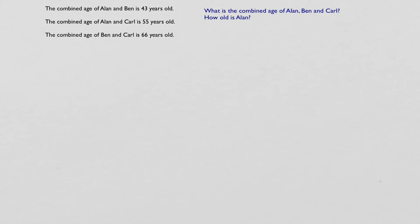Alright, the next type of question to look at is this one. We have a series of clues and we want to find out how old each person is. The combined age of Alan and Ben is 43 years old. Then the combined age of Alan and Carl is 55 years old. And the combined age of Ben and Carl is 66 years old. And we want to work out how old each of them are.